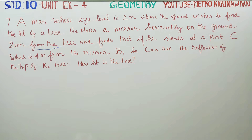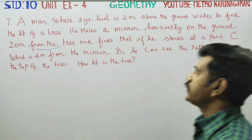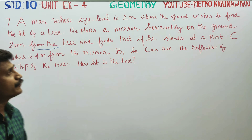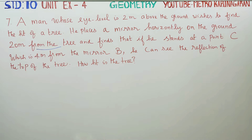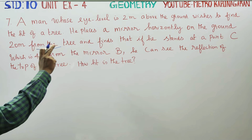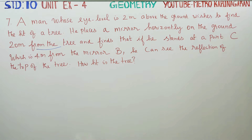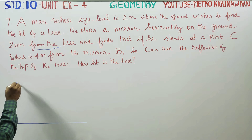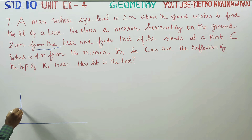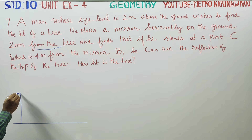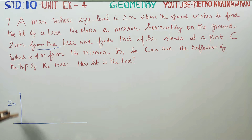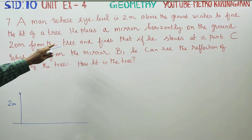Dear Class 10 students. A man whose eye level is 2 meters above the ground — this is the ground level. He wishes to find the height of a tree. His eye level, EC, is 2 meters above from the ground.